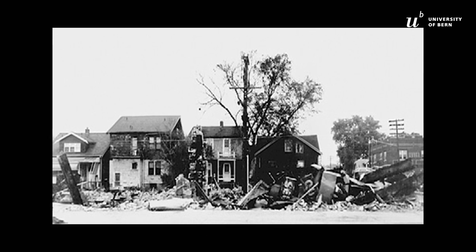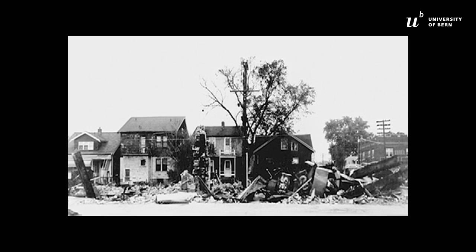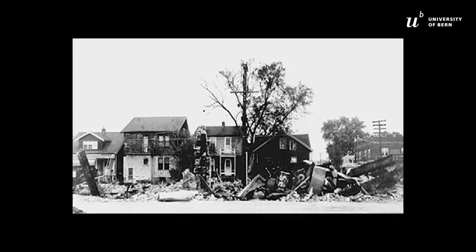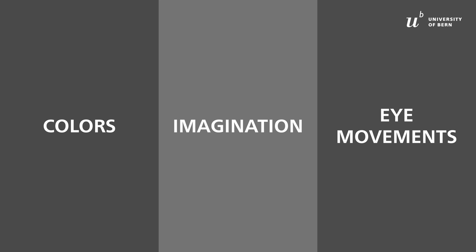Let's start with an example. Look at this neighborhood — would you like to go for a walk here? Is it a dangerous area, and should we stay away from it at all costs? Or is it safe, and we have nothing to worry about? Whatever option we choose, we inevitably make a decision based on our perception. In this video, we will have a look at several examples that compellingly demonstrate how perception works — covering colors, imagination, and eye movements.